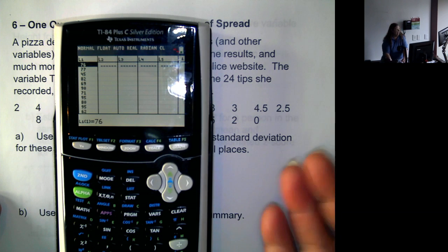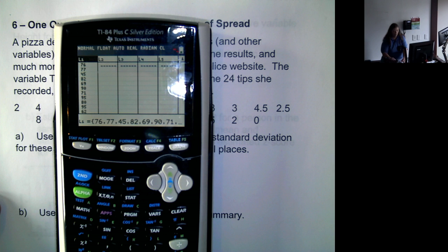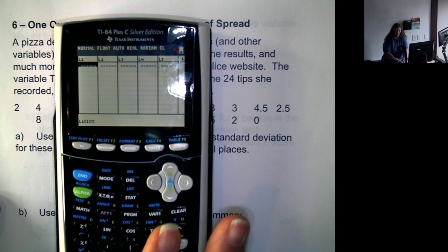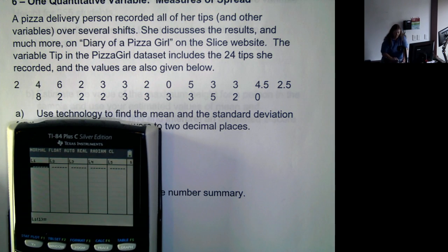Now I already have numbers in there, so I'm going to use the up arrow, clear, down arrow, erases what's in the list. And now I'm going to enter the numbers for this dataset, hitting enter after each one.